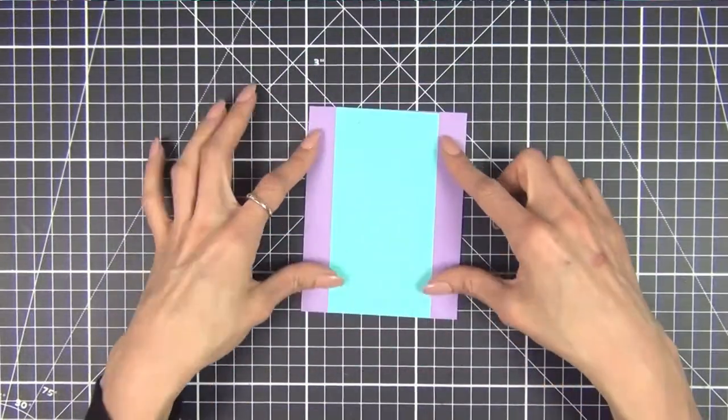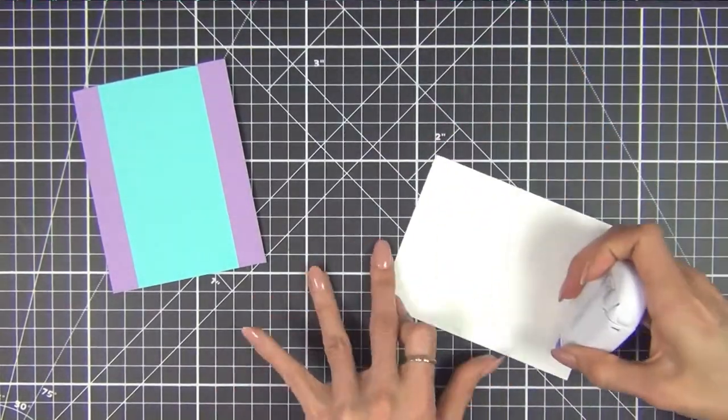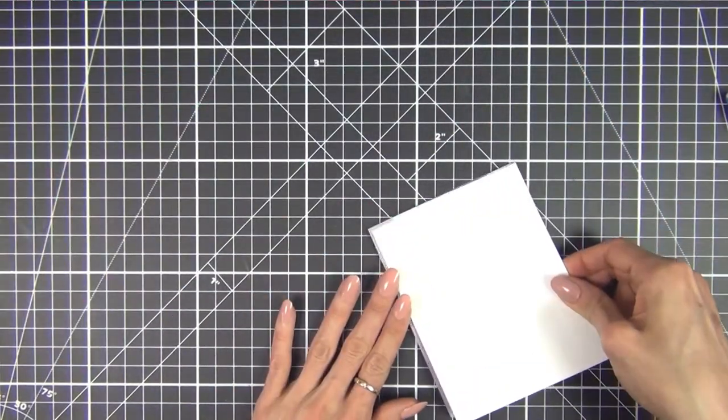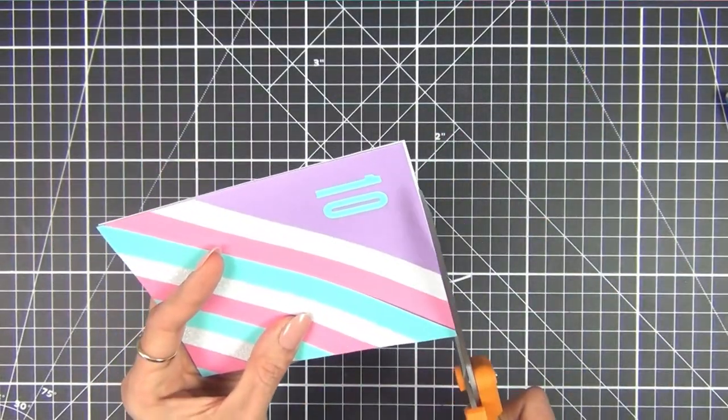For the final step, I take a white A2 size card panel and stick it on the back to cover up the purple flaps. This is optional, I just think it gives it more of a finished look and it also makes the card a little more sturdy.